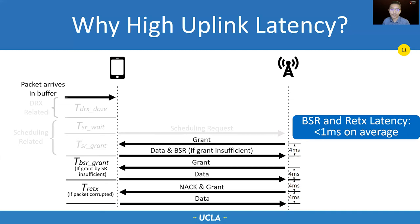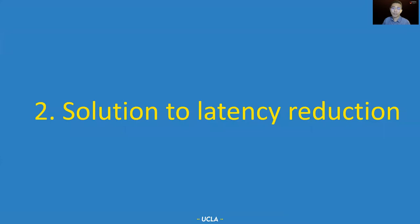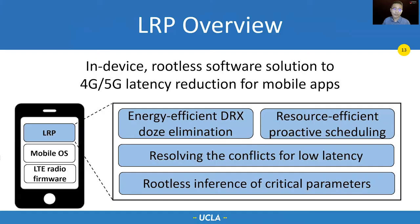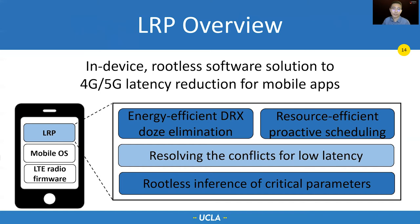So, we have identified two latency elements. How to reduce them then? We designed LRP. It has two component solutions to reduce DRX-doze latency and scheduling latency. When you put those components together, there are conflicts. LRP resolves those conflicts and makes sure both latency elements are tackled. It finally infers all the critical parameters at the application layer without root privilege. In this talk, we will focus on component solutions and application layer inference; for conflict resolution, please refer to our paper.